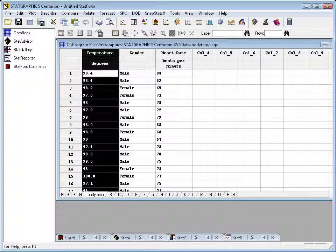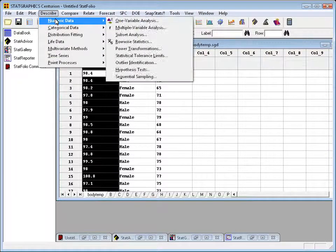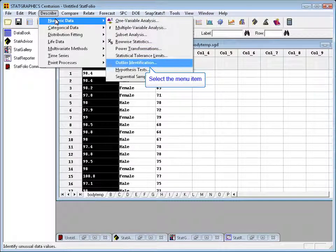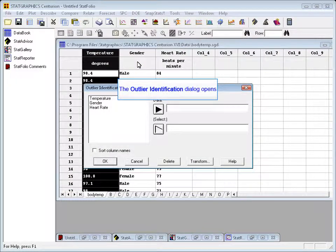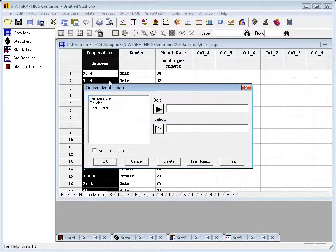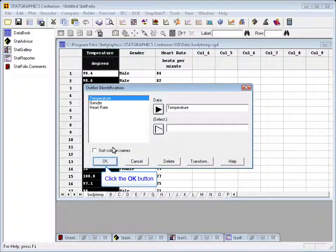To illustrate the identification and treatment of outliers, I've loaded back up my file on body temperatures. This file has a column called Temperature, in which we've recorded the body temperature of 130 subjects. To determine whether or not there are outliers present in that column, we can go to the top menu to Describe, Numeric Data, and pick the Outlier Identification procedure.